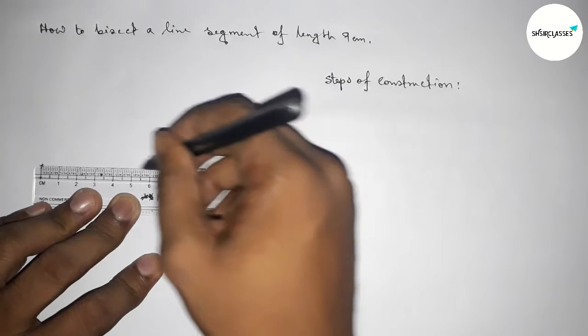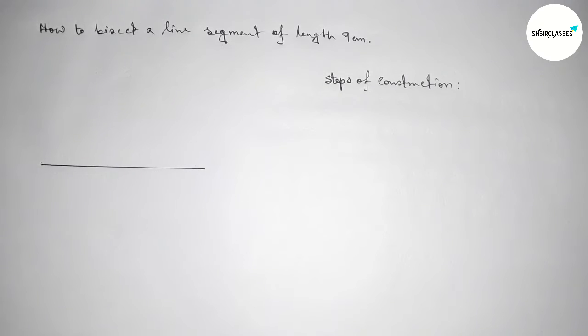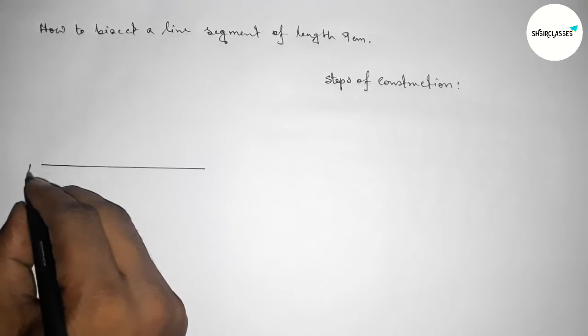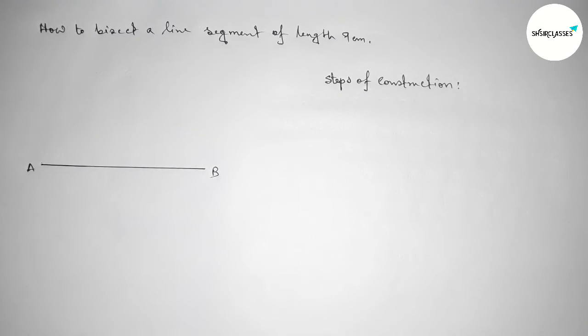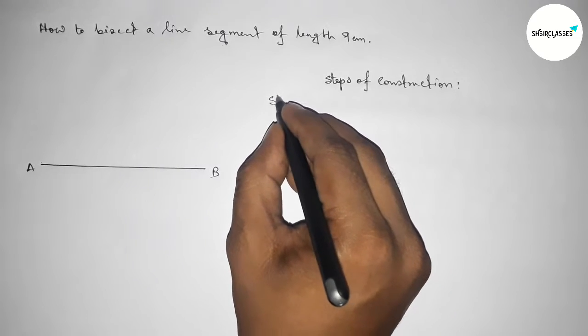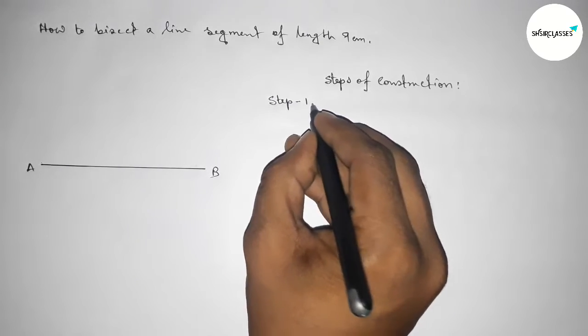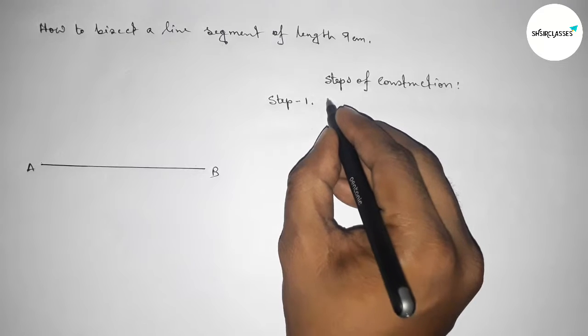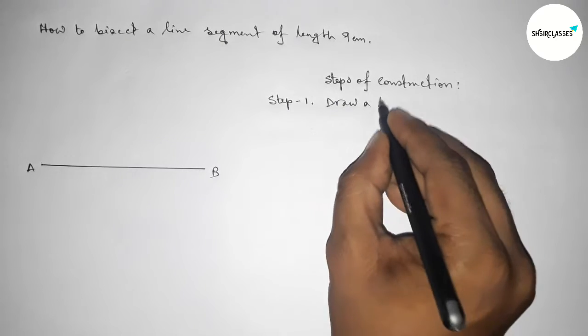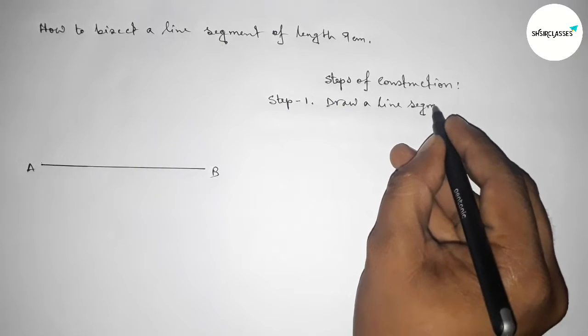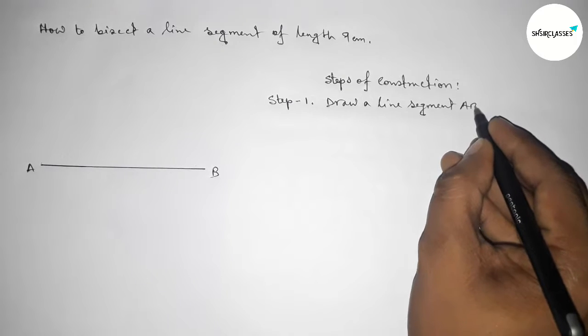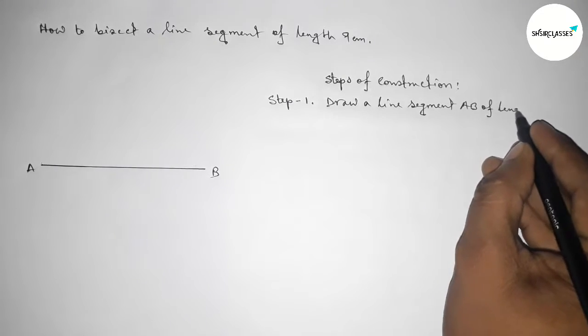So this is a nine centimeter line segment. Taking here point A and here B. Step number one: In this step, we have to first draw a line segment AB of length 9 centimeters using a scale.